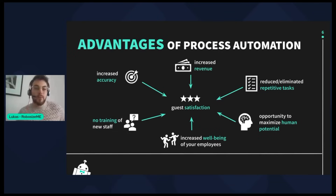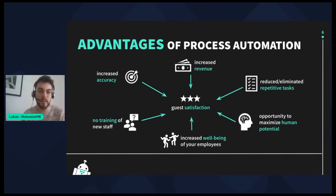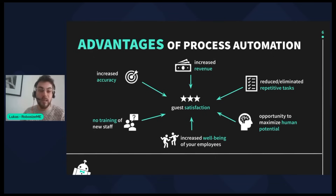Now let's look at the advantages process automation brings to your business. First and foremost, it's increased accuracy, which ultimately leads to increased revenue because we all pay for our mistakes. It will eliminate or at least reduce repetitive tasks, meaning no training of new staff on those tasks is needed. It also contributes to increased well-being of your employees and gives you an opportunity to maximize their potential — all of which has an impact on guest satisfaction.